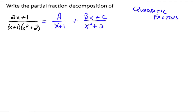For example, if the denominator were x cubed plus two, you'd need Bx squared plus Cx plus D — a generic quadratic expression in the numerator. The idea is that when your factors are not linear, you compensate with a numerator one degree less. Everything else stays exactly the same.